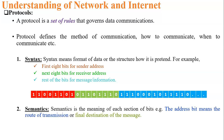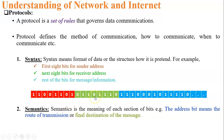The second key element is semantics. Semantics means the meaning of each section, each bit, or each block of bits. The address bits define the route of transmission — how the sender will communicate with the receiver and which route the data will take from sender to receiver. This is semantics.